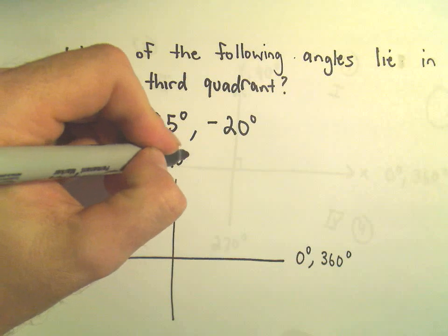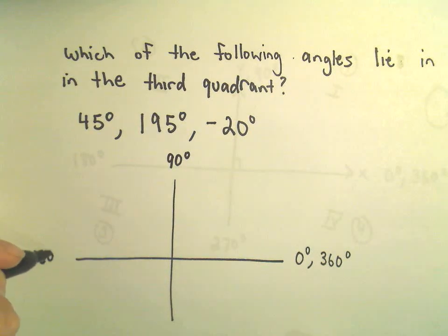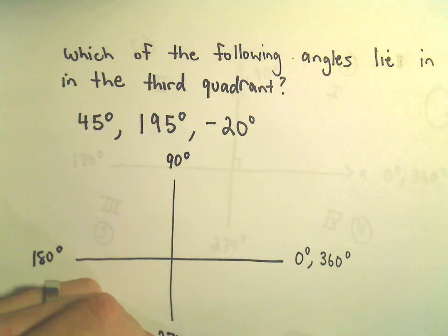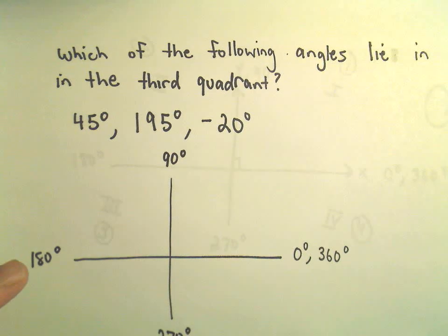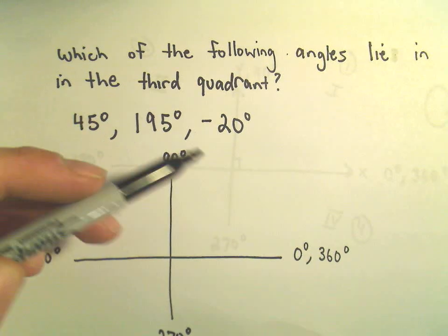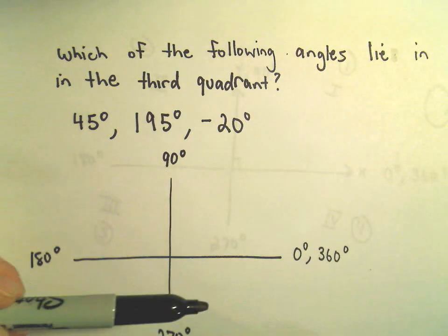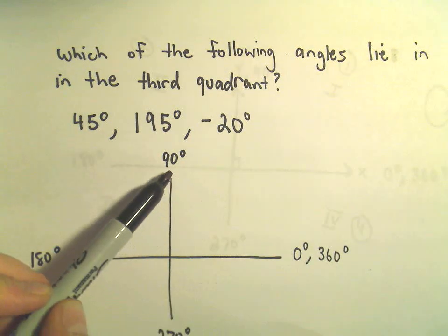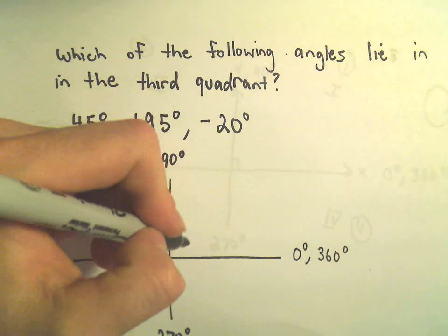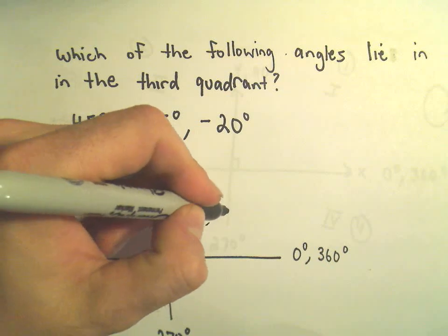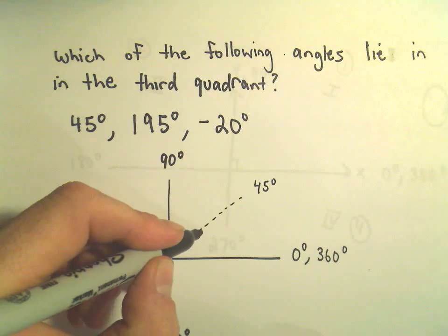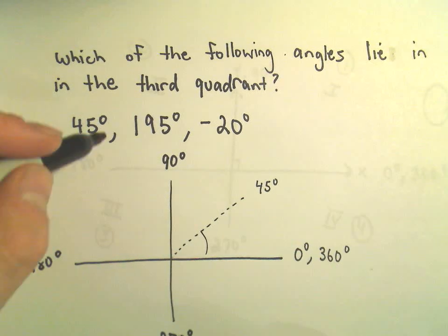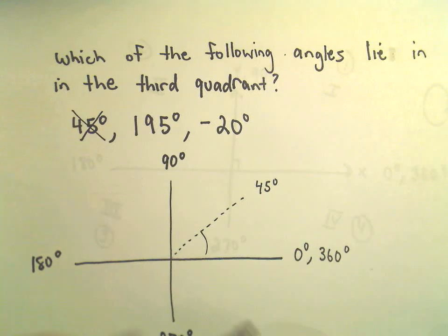This is 90 degrees at the top, 180 over at the left, 270 at the bottom — this is using positive angles. The first angle, 45 degrees, is certainly between 0 degrees and 90 degrees, so 45 degrees would fall somewhere in the first quadrant. That's not quite right.